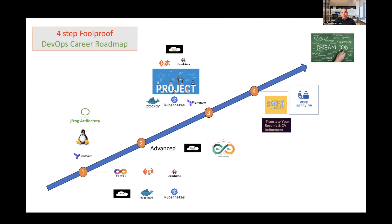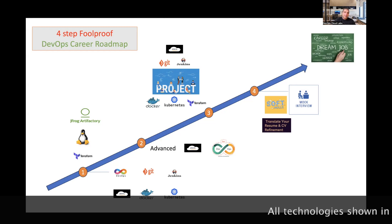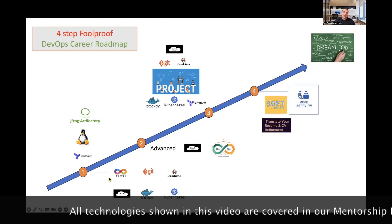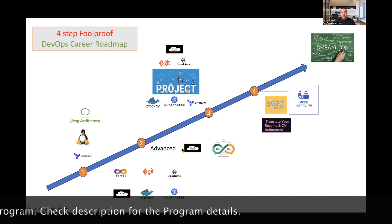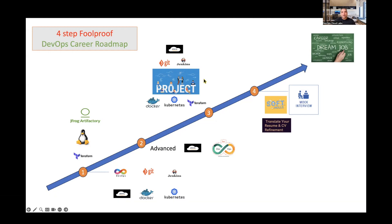Once you have all four of these things in place, that is the proper way to get a DevOps job. You might be anywhere in this path — you might have completed step one and be in the middle of step two, lacking certifications, or between steps two and three where you need to complete projects. While doing those projects, you'll get an idea of how all these technologies line up together. Then, doing a mock interview is where you identify gaps in your soft skills. It's a clear and foolproof roadmap — if you follow this path, there's no stopping.